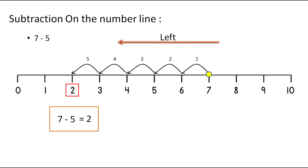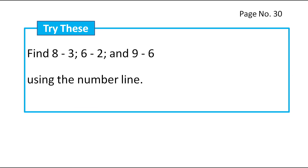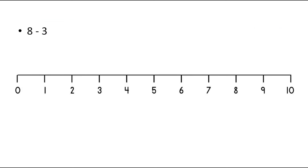Whenever we have to subtract, we have to move towards left and whenever we have to add, we have to move towards right. That's all you have to remember. On page number 30, you have the box 'Try This' and in that box, they have given the questions: find 8 minus 3, 6 minus 2 and 9 minus 6 using the number line. So, let's find out one by one.